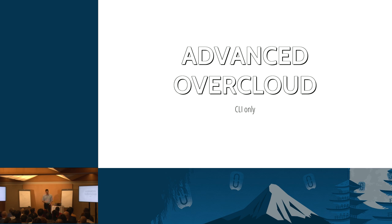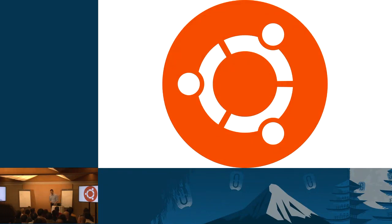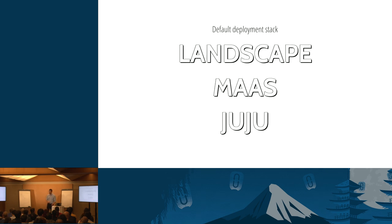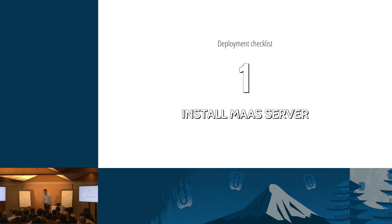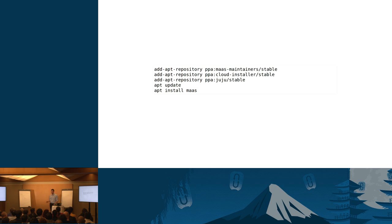Another vendor I want to talk about is Ubuntu and Ubuntu OpenStack. Their default deployment stack consists of Juju for application orchestration, MAAS for bare metal deployment, and Landscape as an overarching web-based management layer. Your deployment walkthrough is remarkably similar in concept to other vendors. The first thing you do is install your MAAS server — MAAS is effectively equivalent to what in Red Hat is the director node, in SUSE is the admin node, and in Mirantis is the Fuel master node.